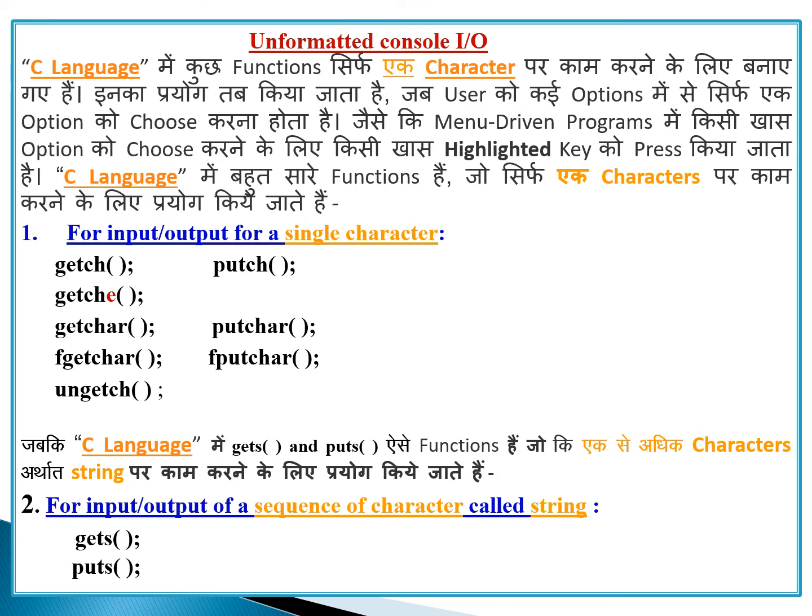Here on the screen are the Unformatted console I/O functions. These C language functions work with only one character. They are useful when the user has to choose from many options, like in a menu-driven program where there are many choices and we have to select one character. These functions handle input and output for a single character.